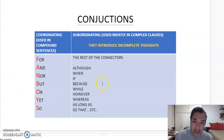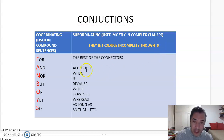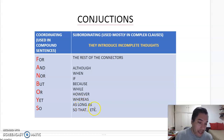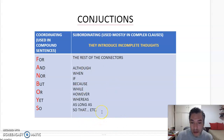Then we have subordinating conjunctions, which introduce an incomplete clause. These include: although, when, if, because, why, however, where, et cetera. Most of these introduce an incomplete thought.